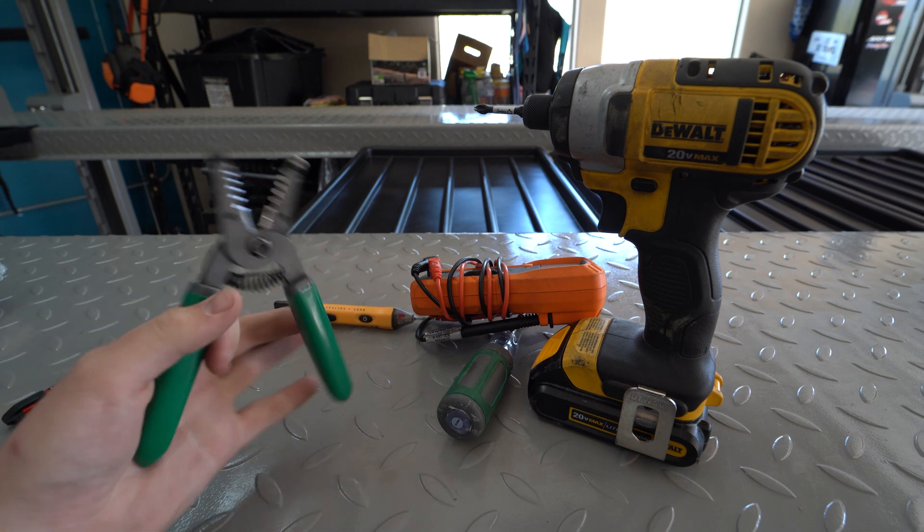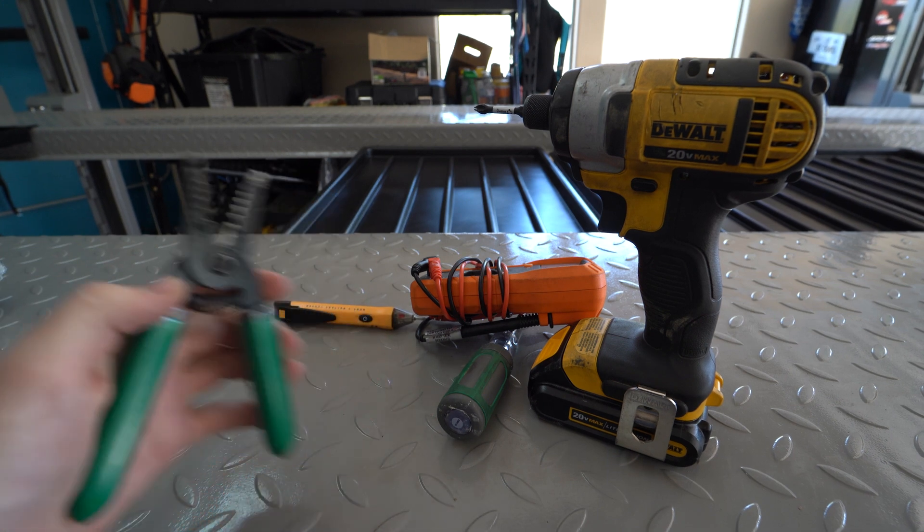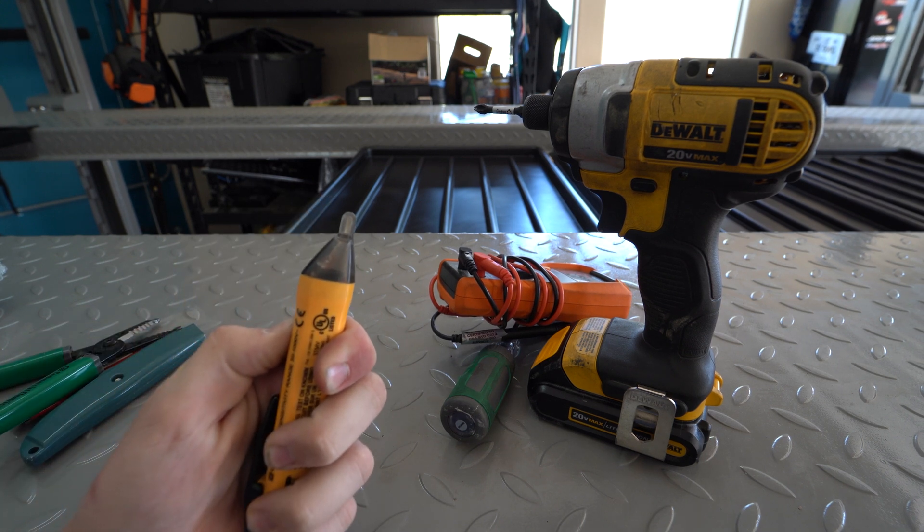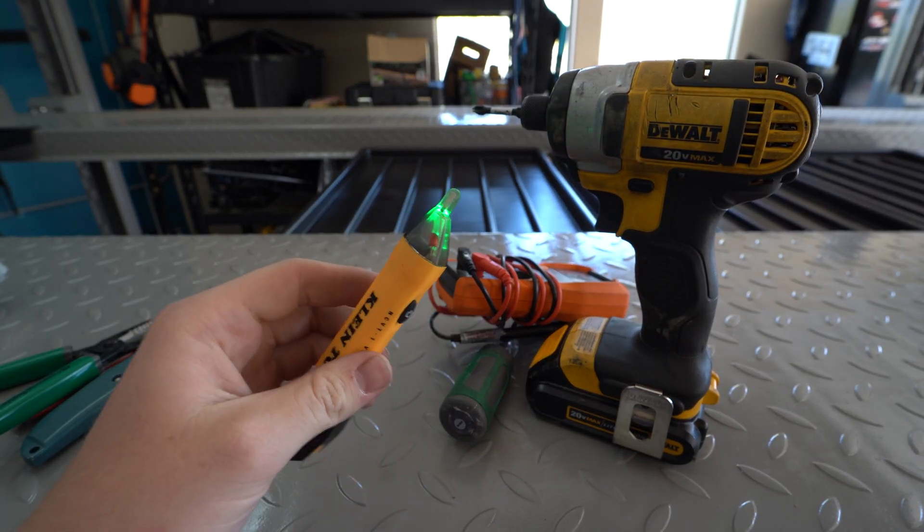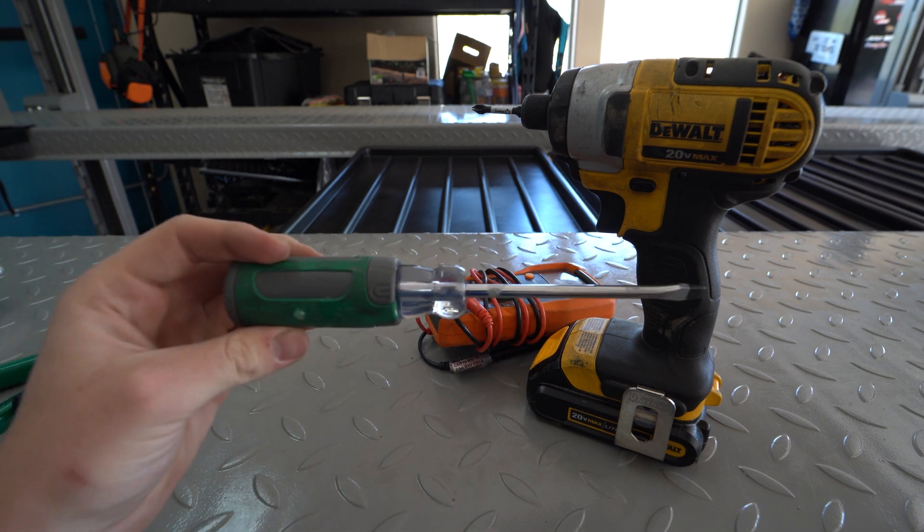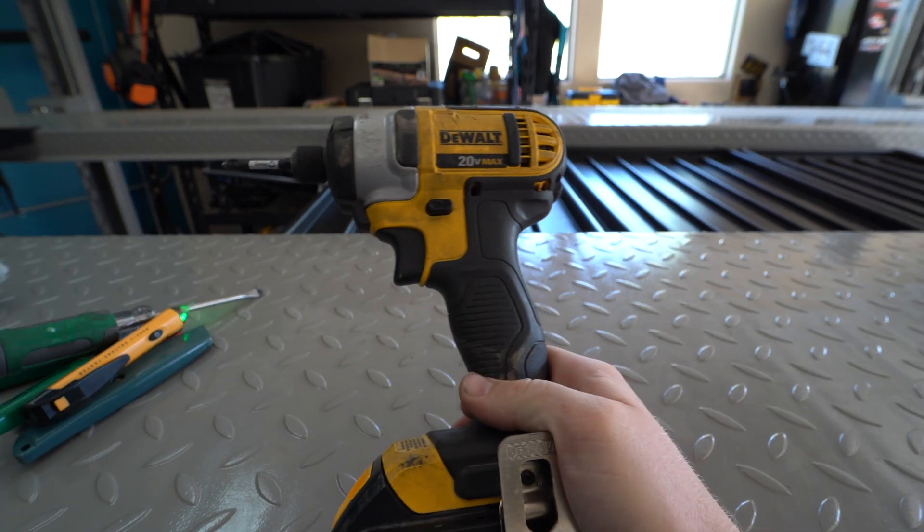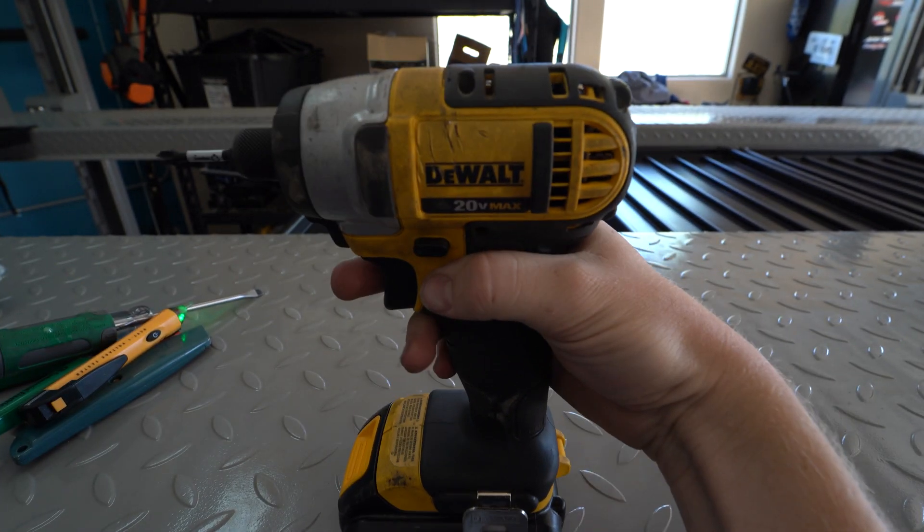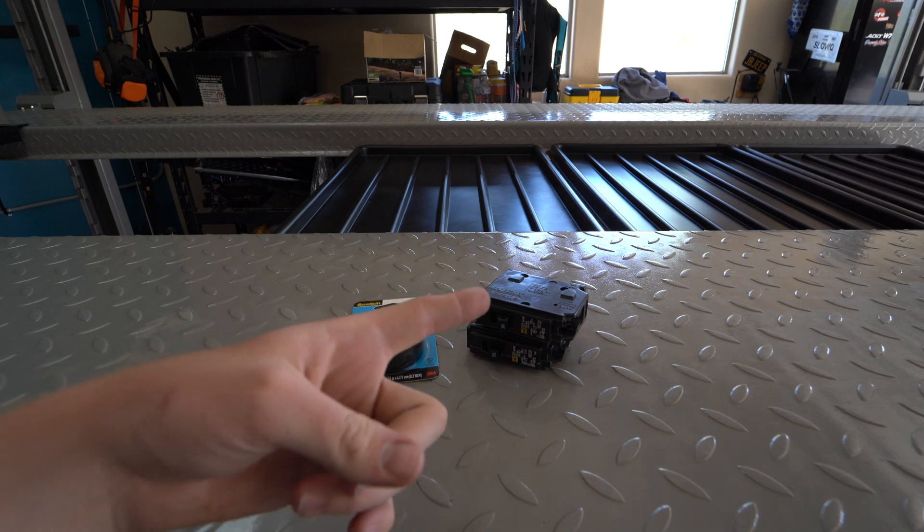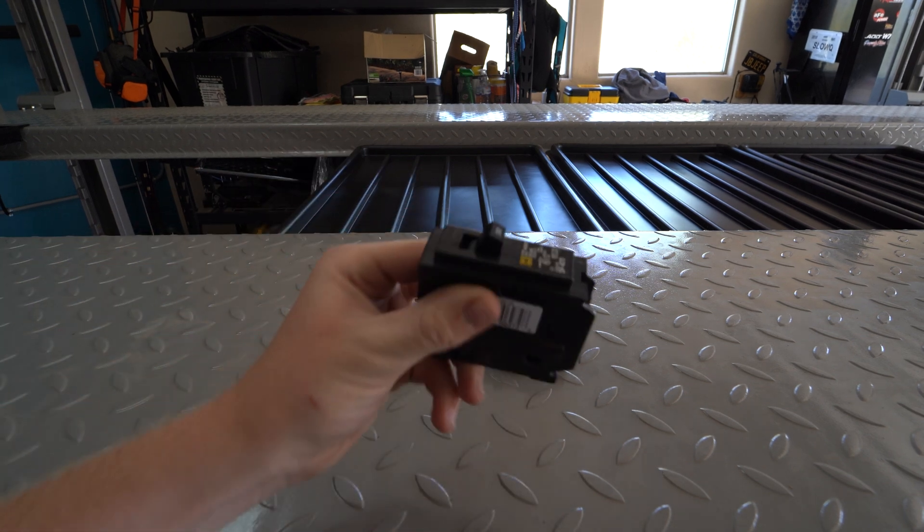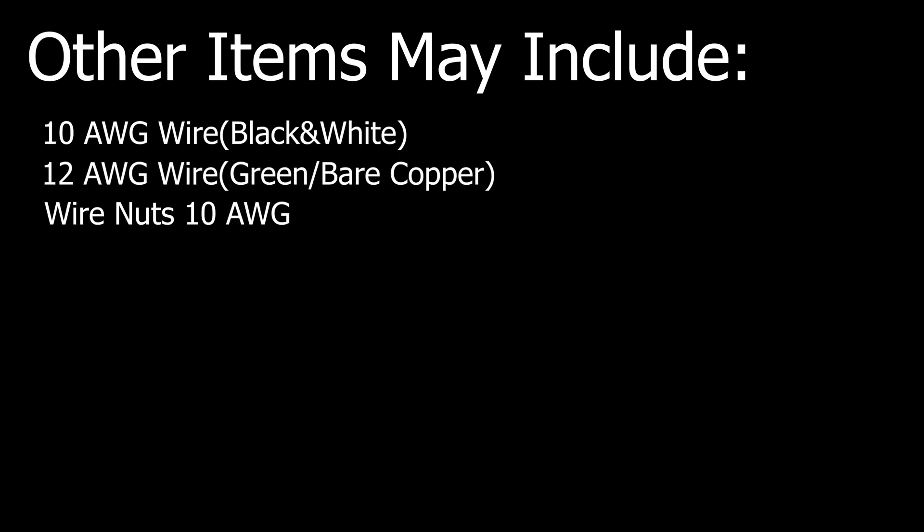As far as tools, a couple razor blades, a wire stripper, an electrical tester, a couple screwdrivers, a multimeter, and a power drill. Make sure to get the correct breaker for your electrical box as well as some electrical tape. Other items that you may need include 10 gauge wire black and white as well as some 12 gauge wire. You're also going to need some wire nuts and possibly some conduit to run to the existing electrical panel.